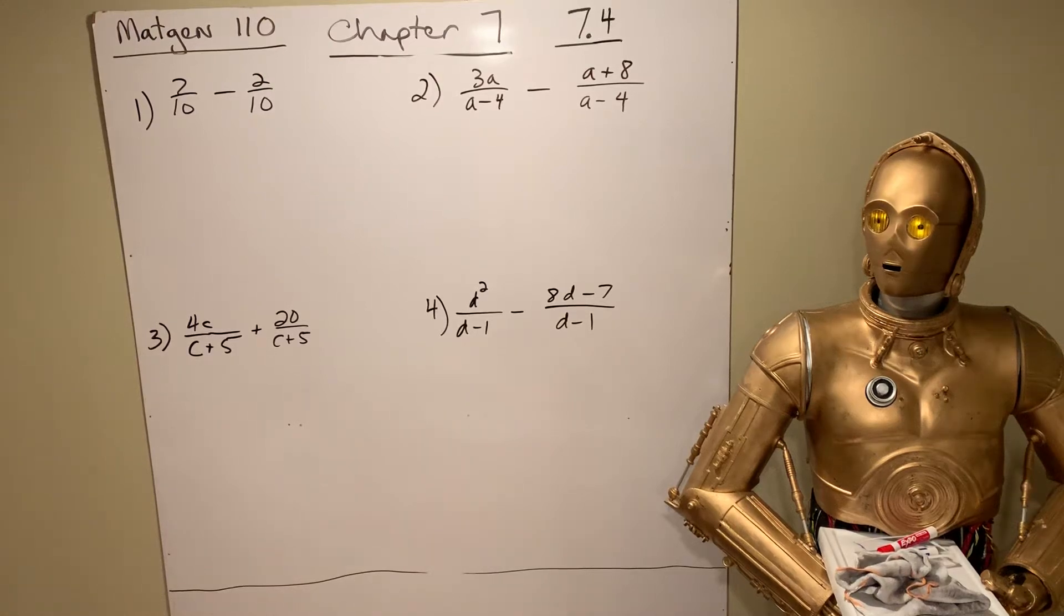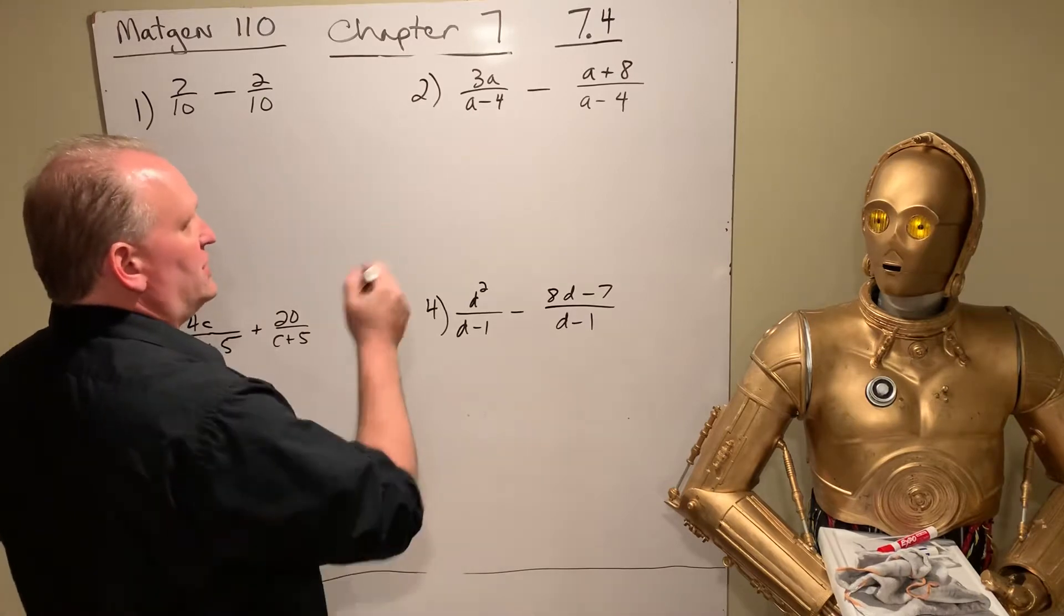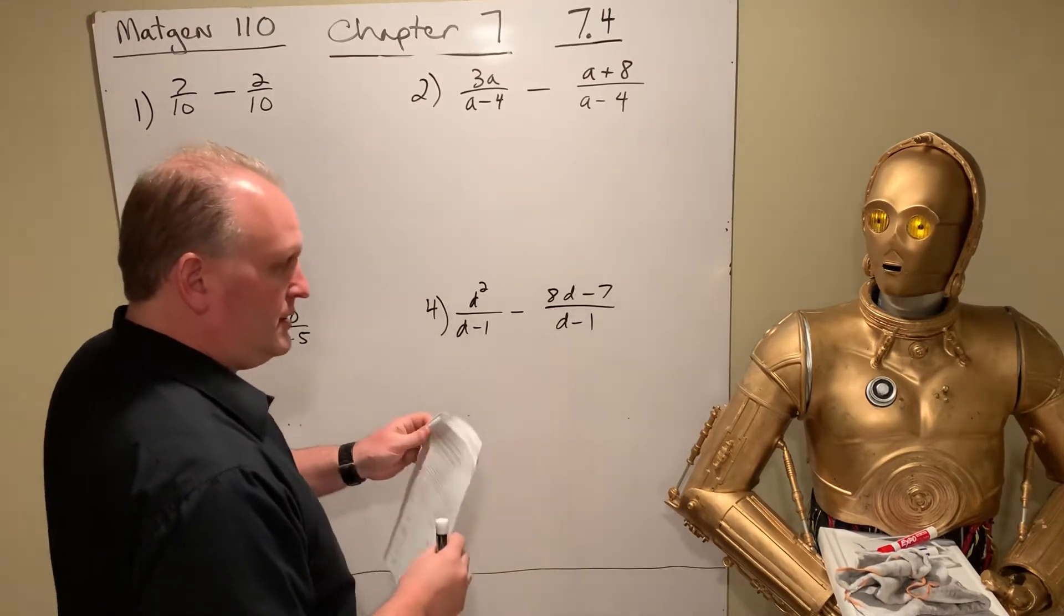All right, this is Math Jen 110, and we're looking at chapter 7, section 4, so 7.4. These are the notes.